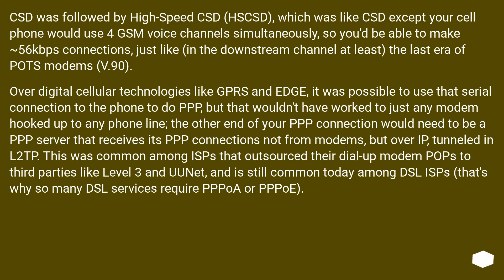CSD was followed by high-speed CSD, or HS-CSD, which was like CSD except your cell phone would use 4 GSM voice channels simultaneously, so you'd be able to make approximately 56 kilobits per second connections — at least in the downstream channel — just like the last era of POTS modems with V.90.